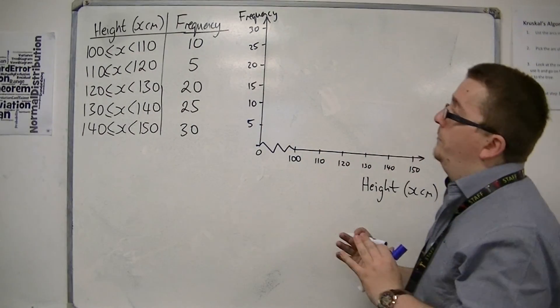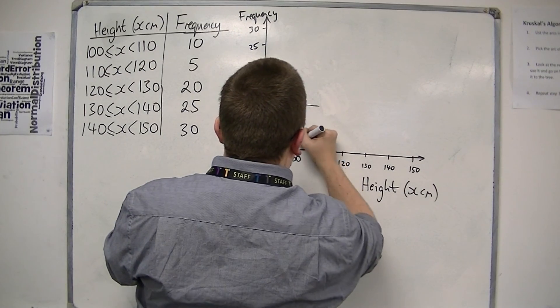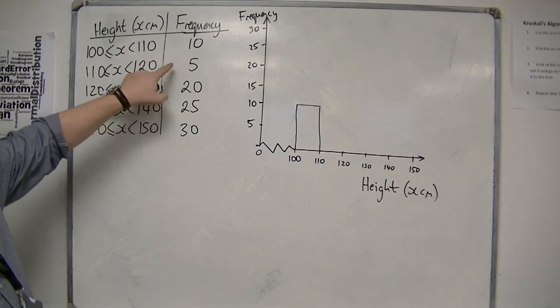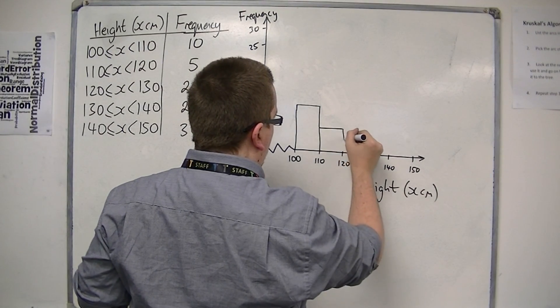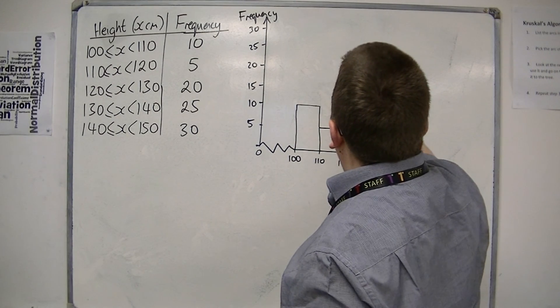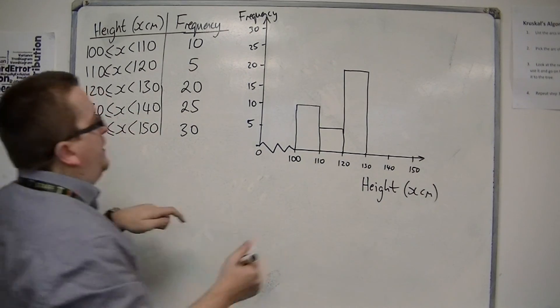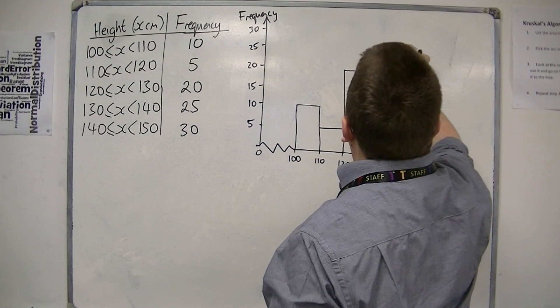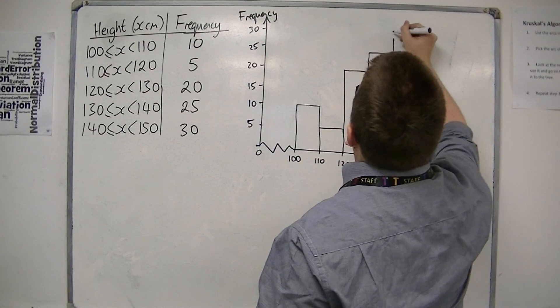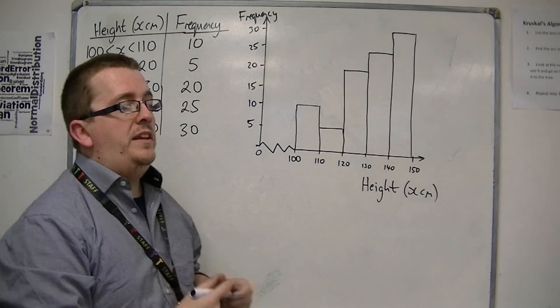Now I can draw my bars. The first one from 100 to 110 is at 10. I'm drawing this freehand, so it's going to look a little bit wobbly. From 100 to 110, we're at 10. Then from 110 to 120, we have 5. From 120 to 130, we have 20. From 130 to 140, we've got 25. And from 140 to 150, we have 30. That is what my frequency diagram would look like.